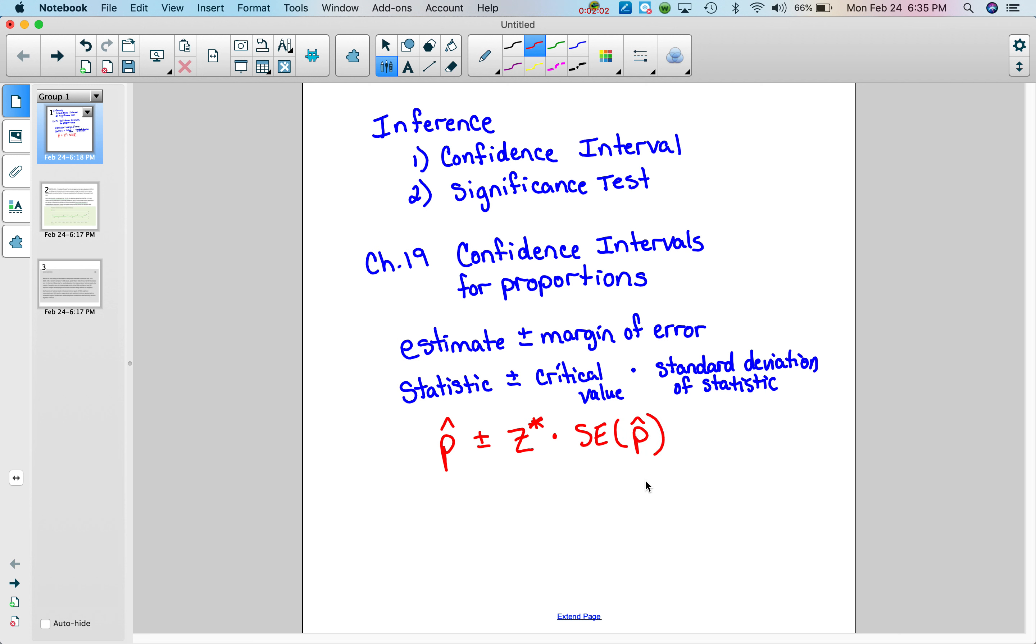So the standard error to calculate that, it's just the square root of p hat times 1 minus p hat over n.